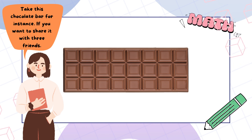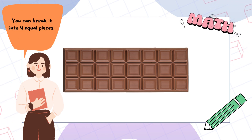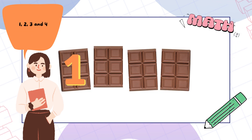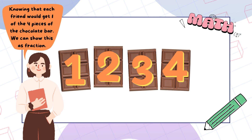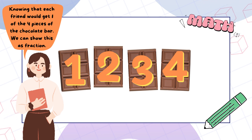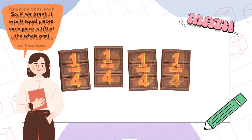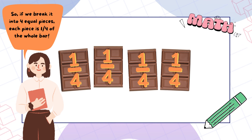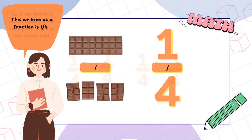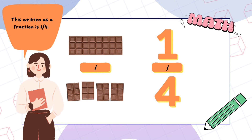Take this chocolate bar for instance. If you want to share it with three friends, you can break it into four equal pieces: one, two, three, and four. Knowing that each friend would get one of the four pieces of the chocolate bar, we can show this as a fraction. If we break it into four equal pieces, each piece is one quarter of the whole bar. This written as a fraction is one quarter.